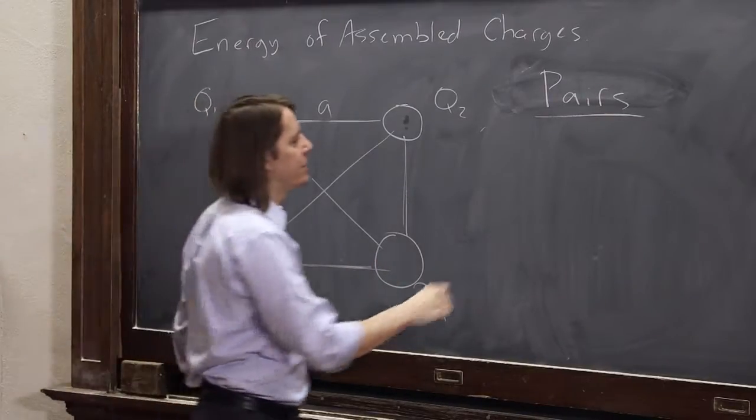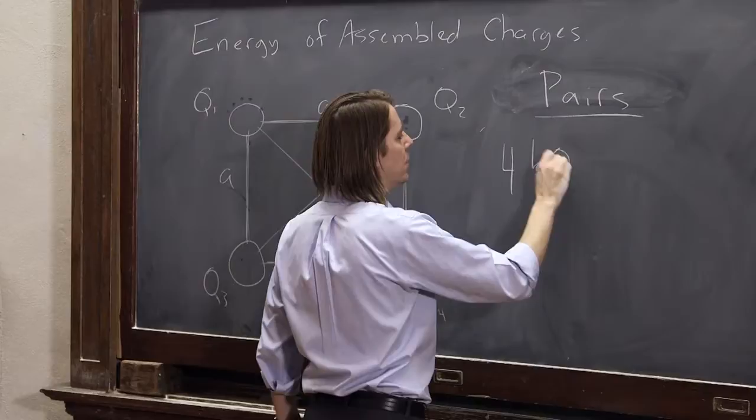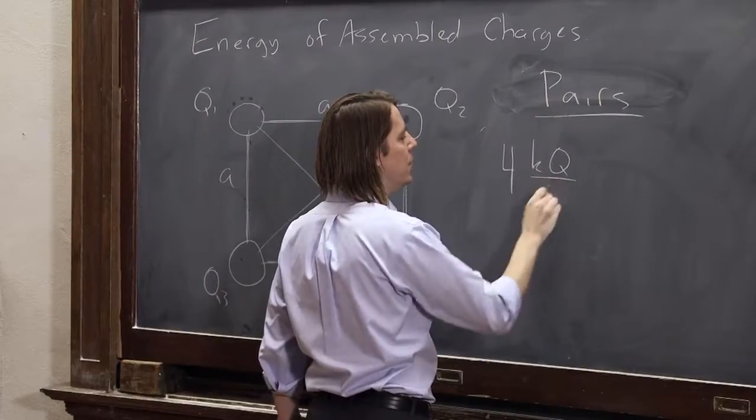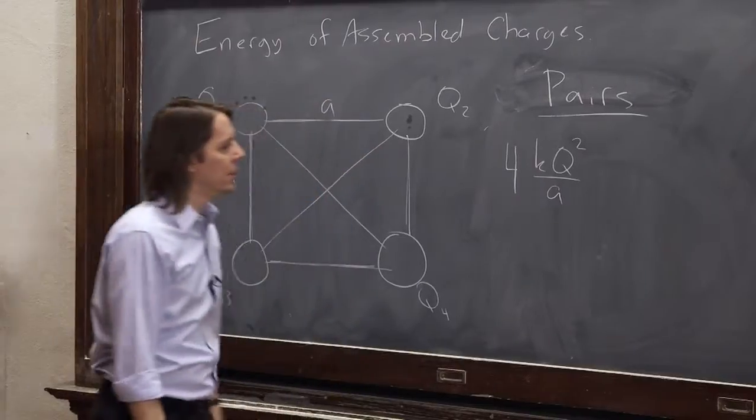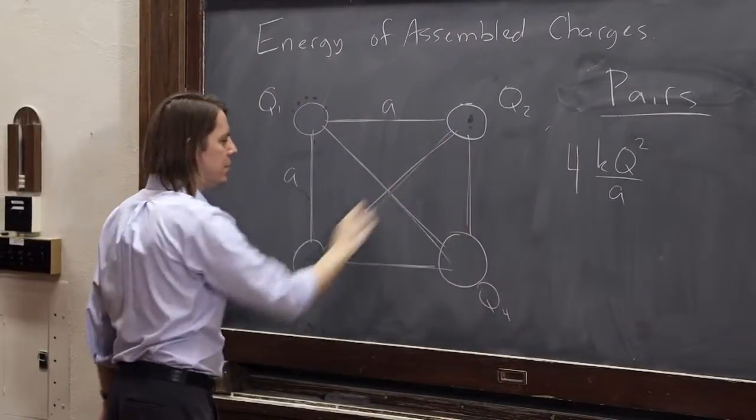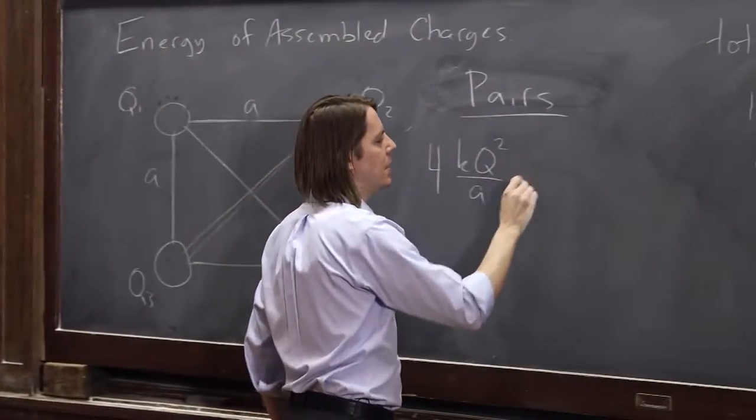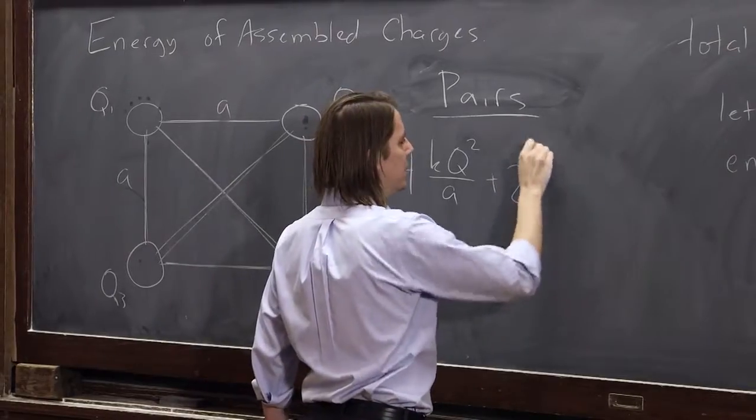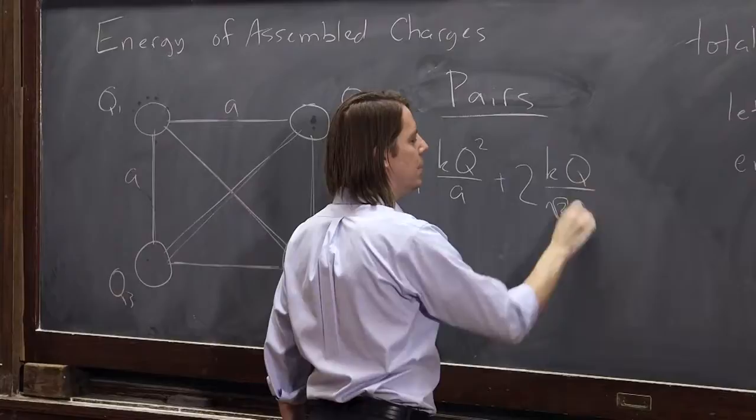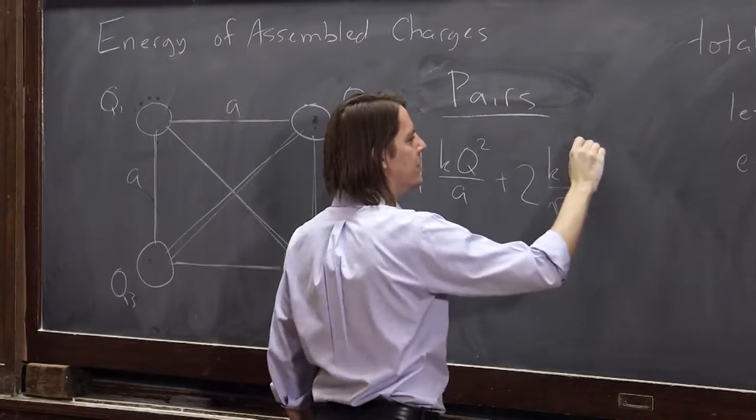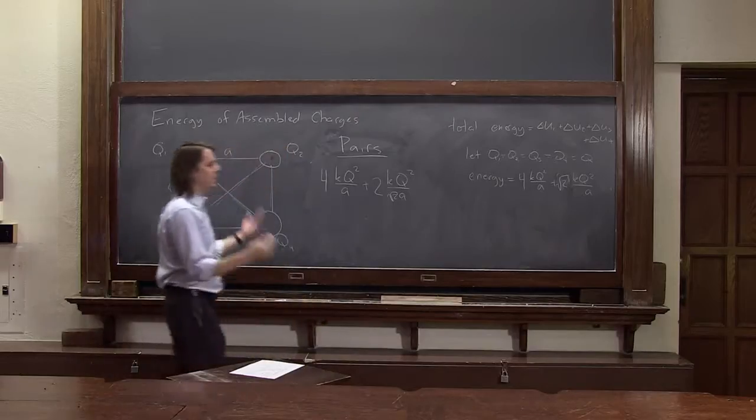So the energy for each one of those is 4. And the energy is KQ. One of the charges makes a Q over a separation A. But then you multiply it by the other Q, so it's squared. And then there's two of these. Each one of these is 2K. It makes a potential KQ over the square root of 2A. But then you have to bring the other charge in, so that squares it. And then you're done.